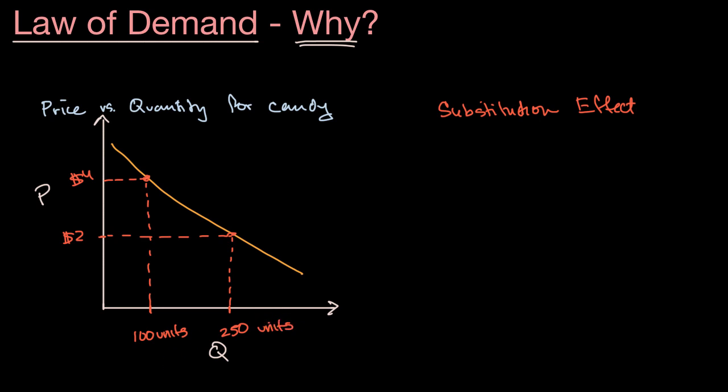Another major category why you would expect this downward sloping demand curve for normal goods, and we'll talk about things like inferior goods in future videos, is the income effect. And in some ways this might be the most intuitive. Well if the price went from $4 to $2, well the cost of those 100 units would now be half as much, it would go from $400 to $200.